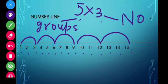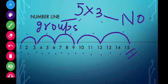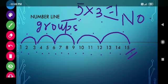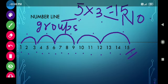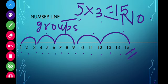After taking five jumps of three numbers each, we can see we have made jumps one, two, three, four, and five, and we have reached fifteen. That means five multiplied by three equals fifteen. This is how you can find answers to multiplication facts using a number line.